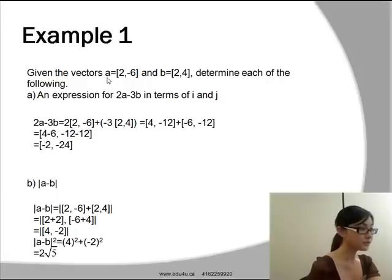Now let's take a look at example 1. Given the vectors a=[2,-6] and b=[2,4], determine each of the following.